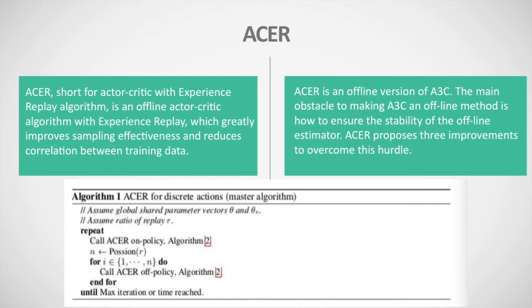The second related algorithm is ACER, short for Actor-Critic with Experience Replay. It is an off-policy actor-critic algorithm with experience replay, which greatly improves sampling effectiveness and reduces correlation between training data. ACER introduces three improvements to overcome certain hurdles.